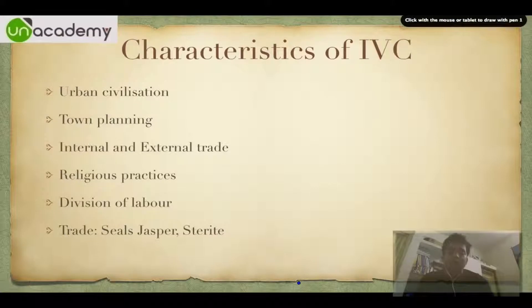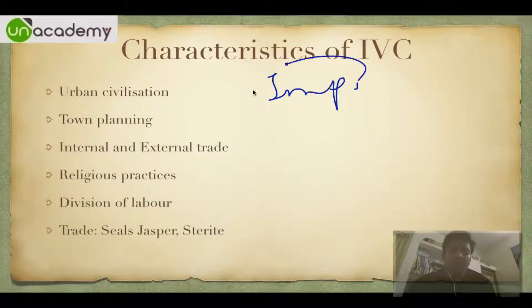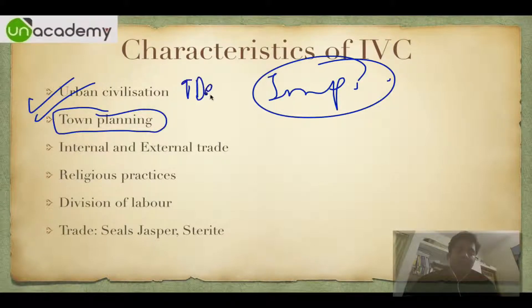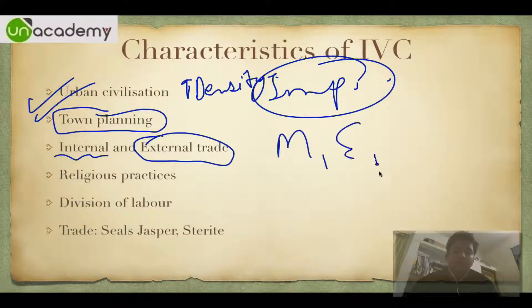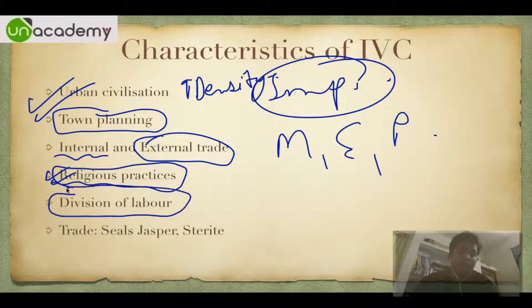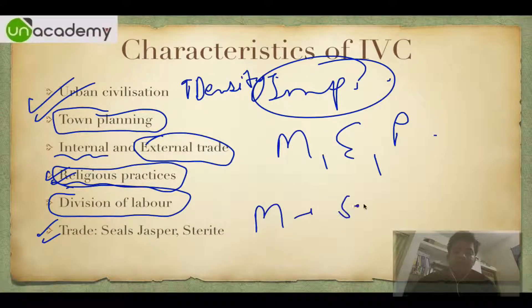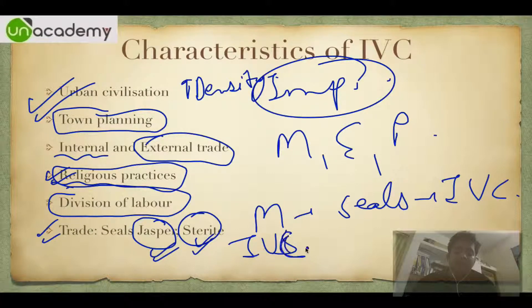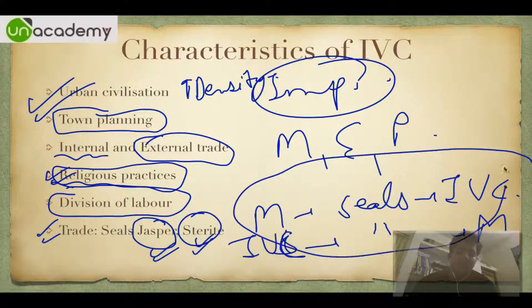The key characteristics of IVC: first, it was an urban civilization — urban meaning there was town planning and increased density of human beings. Internal and external trade existed, especially with Mesopotamia, Egypt, and Persia. We know trade occurred because Mesopotamian seals have been found in IVC sites, and IVC seals made of jasper and steatite have been found in Mesopotamia.